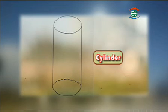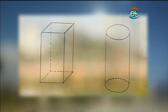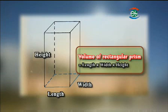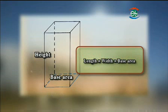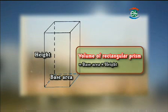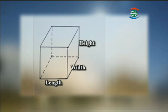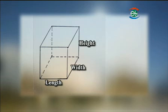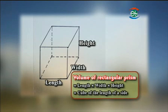Their volumes are calculated in this way. The volume of the rectangular prism equals length times width times height. As the length times the width equals the base area, the volume of the rectangular prism can be calculated by base area times height. When the length, width, and height are the same, the prism becomes a cube. Therefore, the volume of the cube equals the cube of the length of one of its sides.